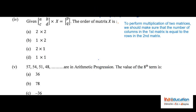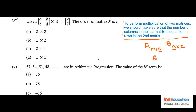Problem 4 is about the order of a matrix. Before solving, remember: to multiply two matrices A of order m×n and B of order n×k, the number of columns in A must equal the number of rows in B. The order of the resultant matrix A×B is m×k, eliminating n.